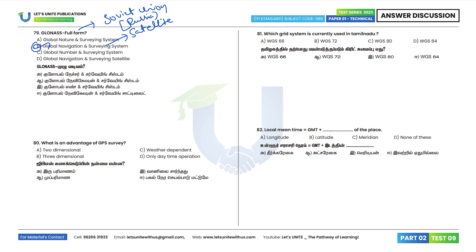Question 80: What is an advantage of GPS? The advantage is three-dimensional positioning. Option B is the correct answer. Question 81: Which grid system is currently used in Tamil Nadu? Tamil Nadu uses the WGS 84 grid system. Option D is the correct answer.